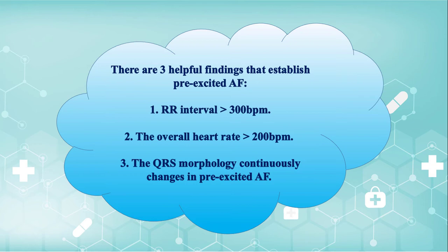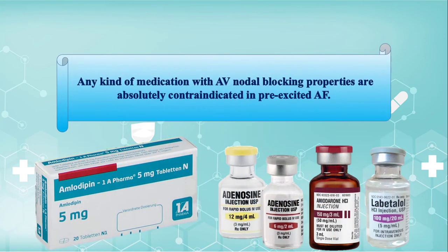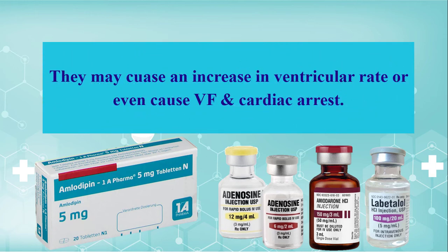Recognizing pre-excited AF is clinically very important. Any medication with AV nodal blocking properties — like beta blockers, calcium blockers, adenosine, amiodarone, and digitalis — are absolutely contraindicated in pre-excited AF. These drugs can enhance conduction down the bypass tract by shortening the refractoriness of the accessory pathway and decreasing conduction down the AV node. Therefore, the ventricular rate increases and may even end in ventricular fibrillation and sudden cardiac arrest.